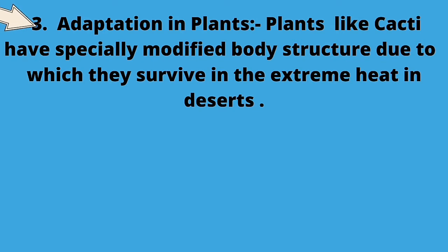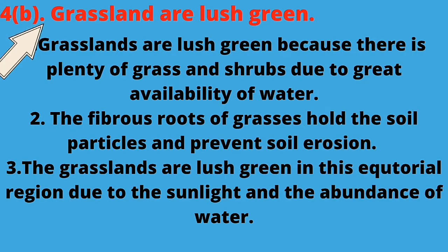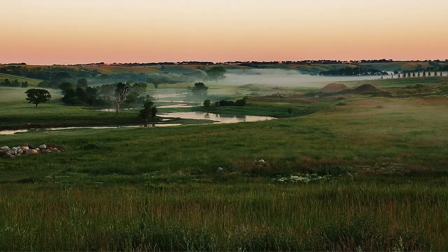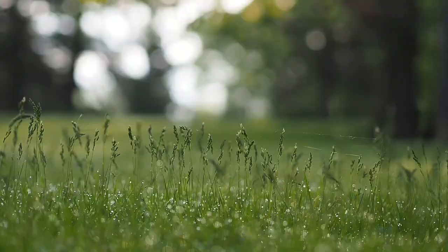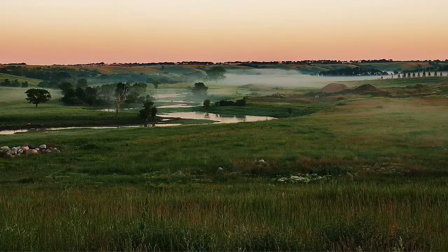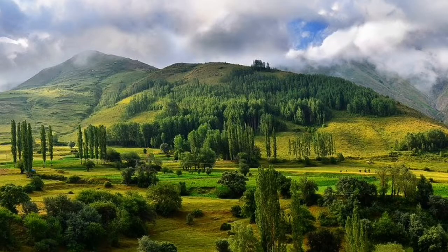The second statement is: grasslands are lush green. Grasslands are green because there is grass and shrubs in good quantity, with no lack of water, and sunlight is also available in proper quantities in the equatorial region where there is abundance of water and sunlight.